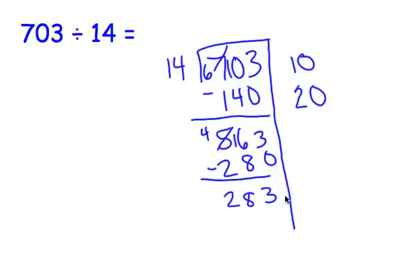We have 283 left. So, why don't we take out another 280, which is another 20 groups of 14. 20 times 14 is 280. Subtract. We're left with 3.